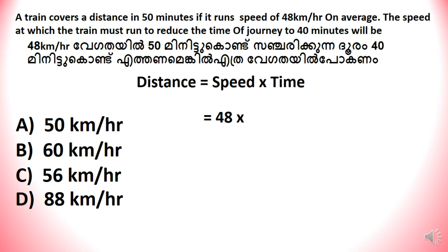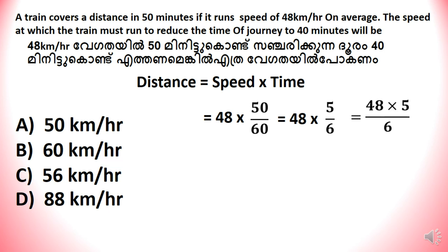The speed is 48 into 50 divided by 60. That is 48 into 5 divided by 6. 48 divided by 6 is 8. That is 40 km.